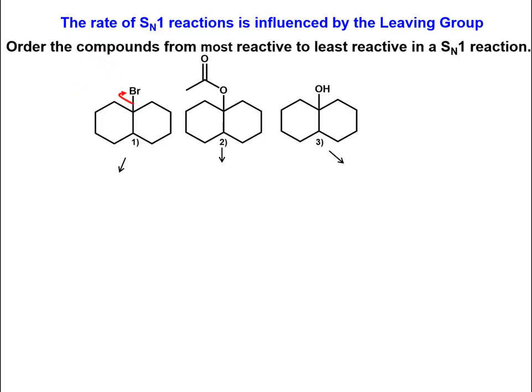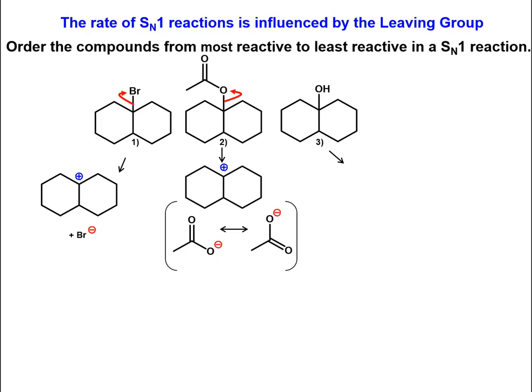For compound 1, the bromide ion is the leaving group. For compound 2, the acetate ion is the leaving group. And for compound 3, the hydroxide ion is the leaving group.